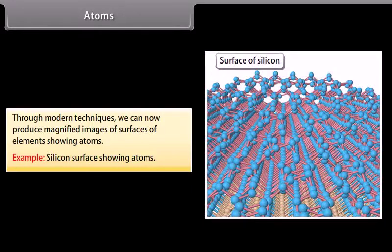More than millions of atoms when stacked would make a layer barely as thick as this sheet of paper. Through modern techniques, we can now produce magnified images of surfaces of elements showing atoms. Example: Silicon surface showing atoms.